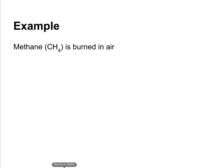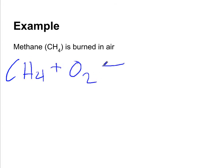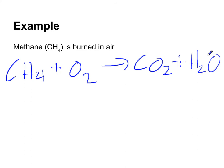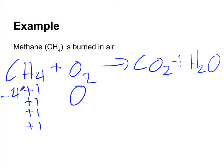Let's look at another reaction where methane is burned in air. We have CH₄ and O₂ as reactants, and assuming complete combustion we form carbon dioxide and water. We assign oxidation states to everything: O₂ is in its natural state, so it has an oxidation state of zero. Hydrogen is bonded to a non-metal, so it's plus one, and with four hydrogens, carbon must be minus four to balance out. On the product side, oxygen bonded to non-metals is negative two, so carbon in CO₂ must be plus four. Hydrogen remains plus one and oxygen in water is minus two.